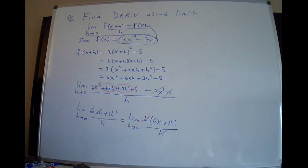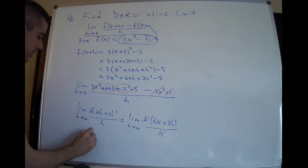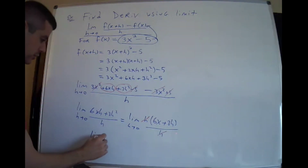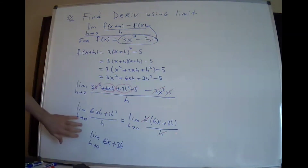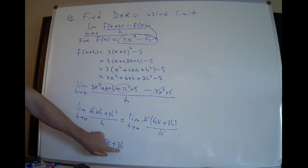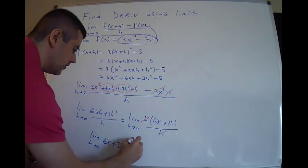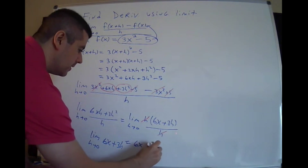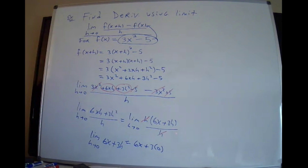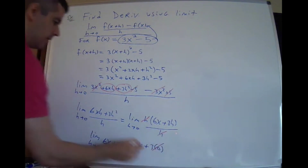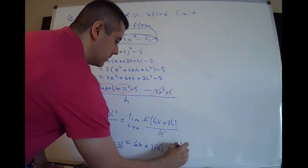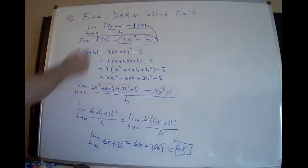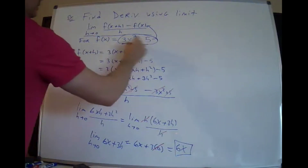h is going to 0, so you cannot plug 0 in there until you've canceled the h. Now there's nothing stopping you from plugging in 0 for h. Replace h with 0 — that's going to kill the remaining h term. 3 times 0 is 0. So you get 6x. That's your derivative.